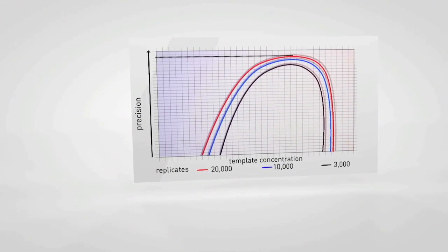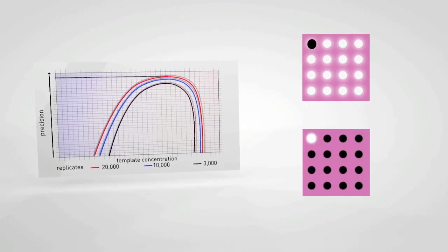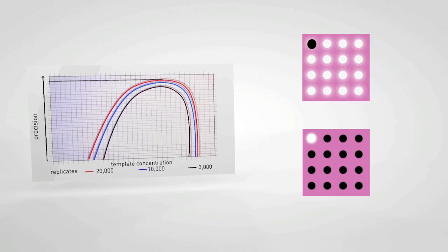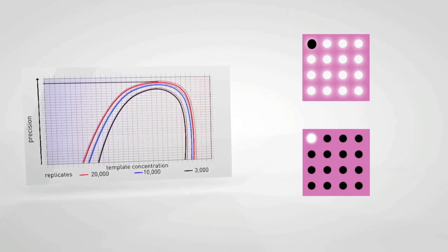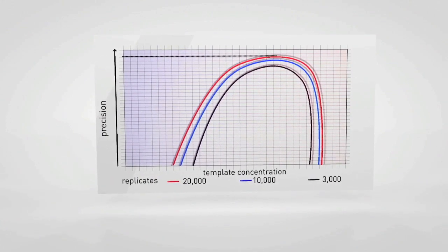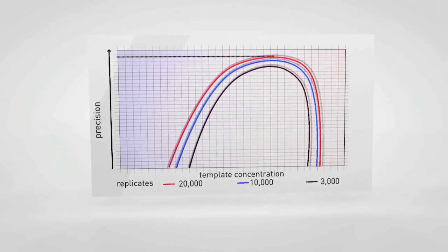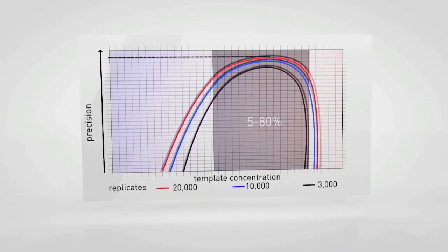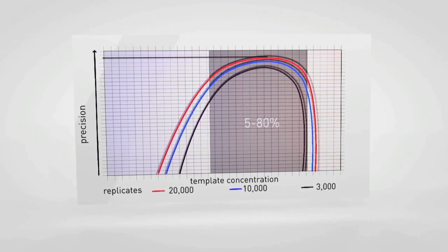It is also determined by the ratio of positive reactions to negative reactions. Very low or very high numbers of negative reaction wells prevent you from achieving high precision data. For maximum precision, the percentage of negative reactions should be targeted between 5% and 80%.